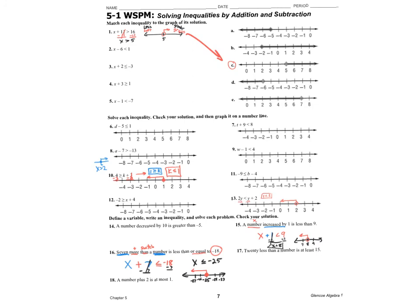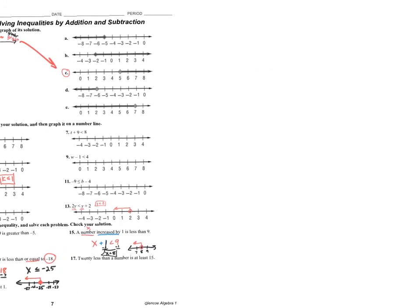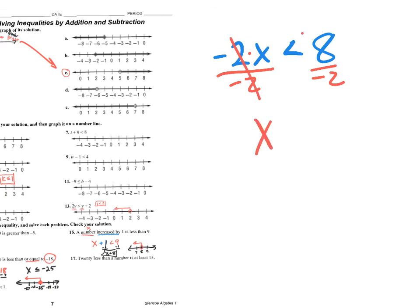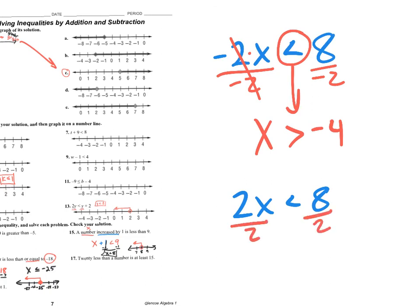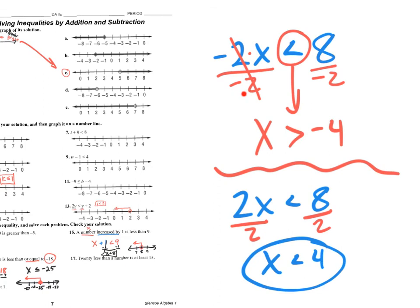I almost forgot — if you ever end up multiplying or dividing by a negative on your last step, you have to flip your inequality symbol. That's the main difference between an equation and an inequality. For example, if you had negative 2x < 8, you'd divide by negative 2 and you'd have to flip the inequality. But if it were 2x < 8, you're dividing by positive 2, so the answer stays x < 4. Important: if you divide or multiply by a negative, flip that inequality symbol. If you don't, keep it the same.